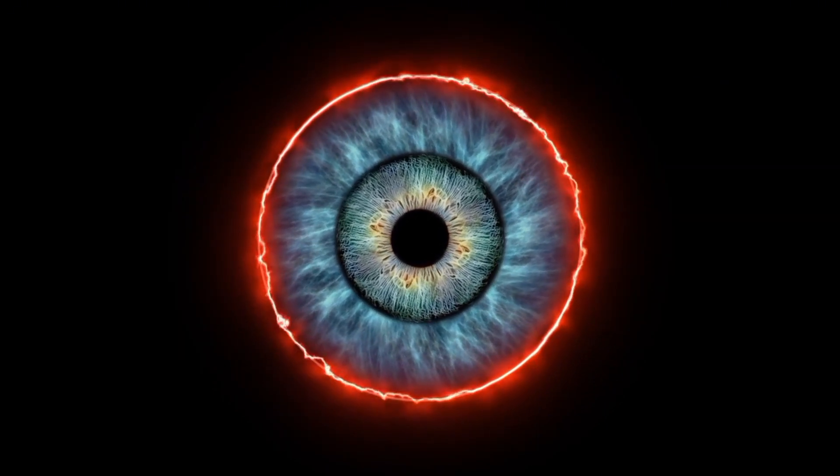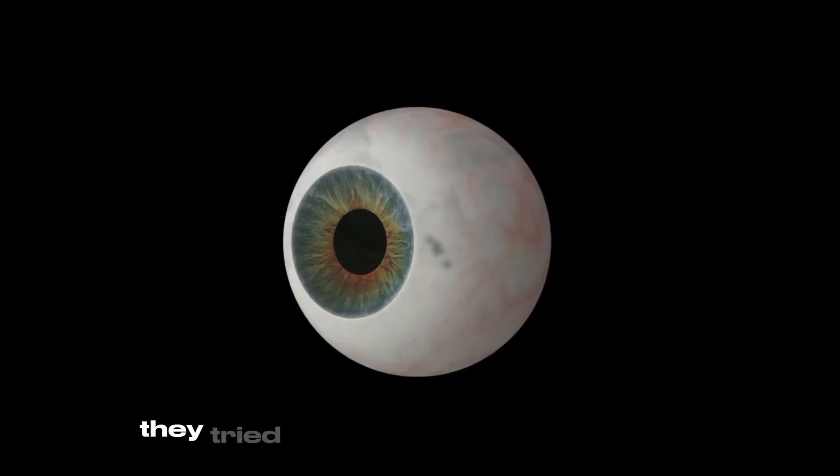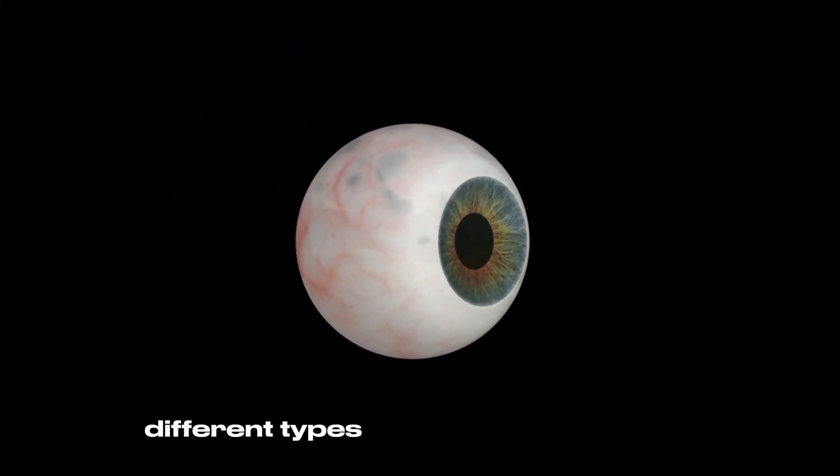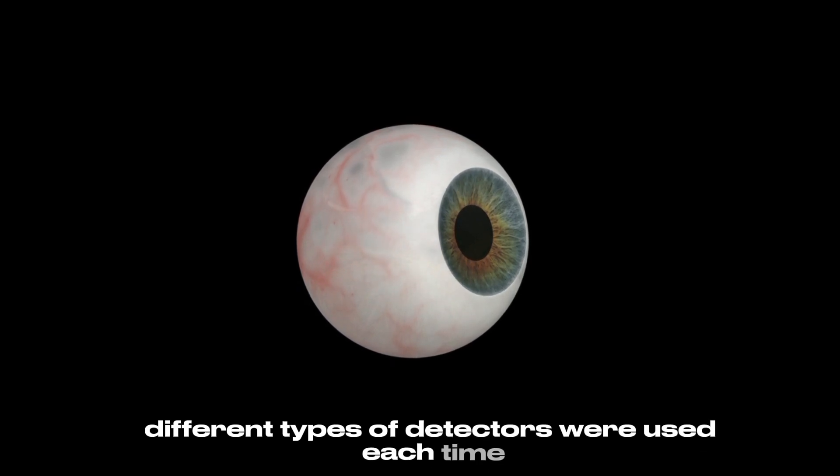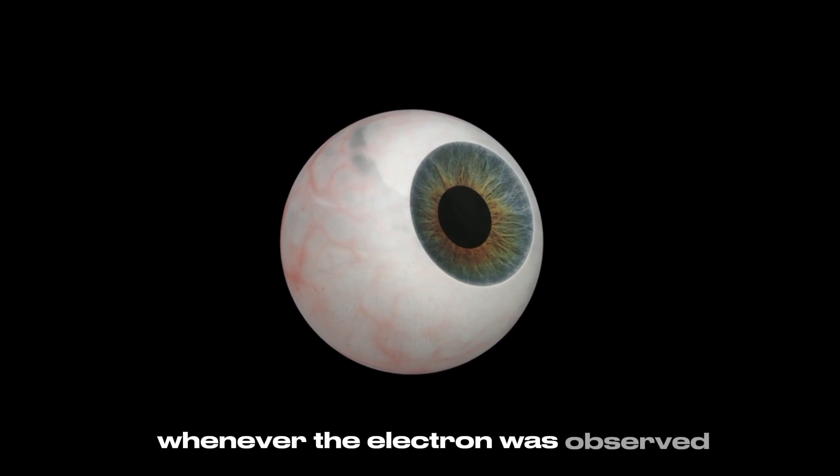This didn't answer their question at all. Instead, it raised so many more questions. How can observing have any effect on the experiment? They tried this experiment with different variations. Different types of detectors were used each time, but the result was the same. Whenever the electron was observed, it showed characteristics of particle nature. And whenever it wasn't, it showed characteristics of wave nature.